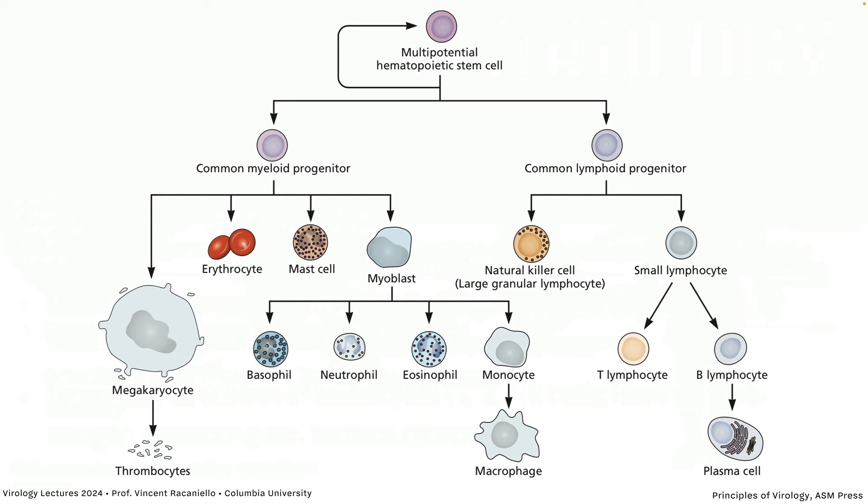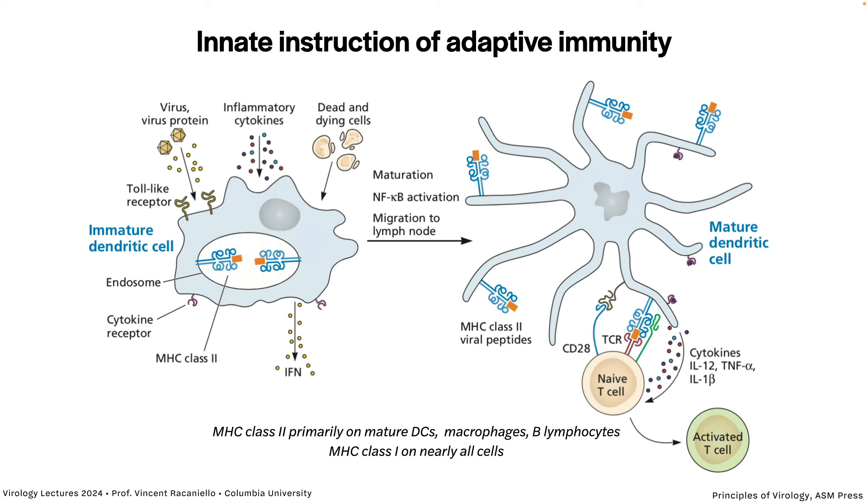All white blood cells begin with a hematopoietic stem cell, typically in the bone marrow, which can give rise to everything. It's multipotential and self-renewing. They initially become two different progenitors: a common myeloid progenitor — giving rise to basophils, neutrophils, eosinophils, and macrophages — and a common lymphoid progenitor, which gives rise to NK cells, B cells, and T cells. B cells also give rise to plasma cells, which are factories for making antibodies. During infection, signals go to the bone marrow to make more of these cell types.